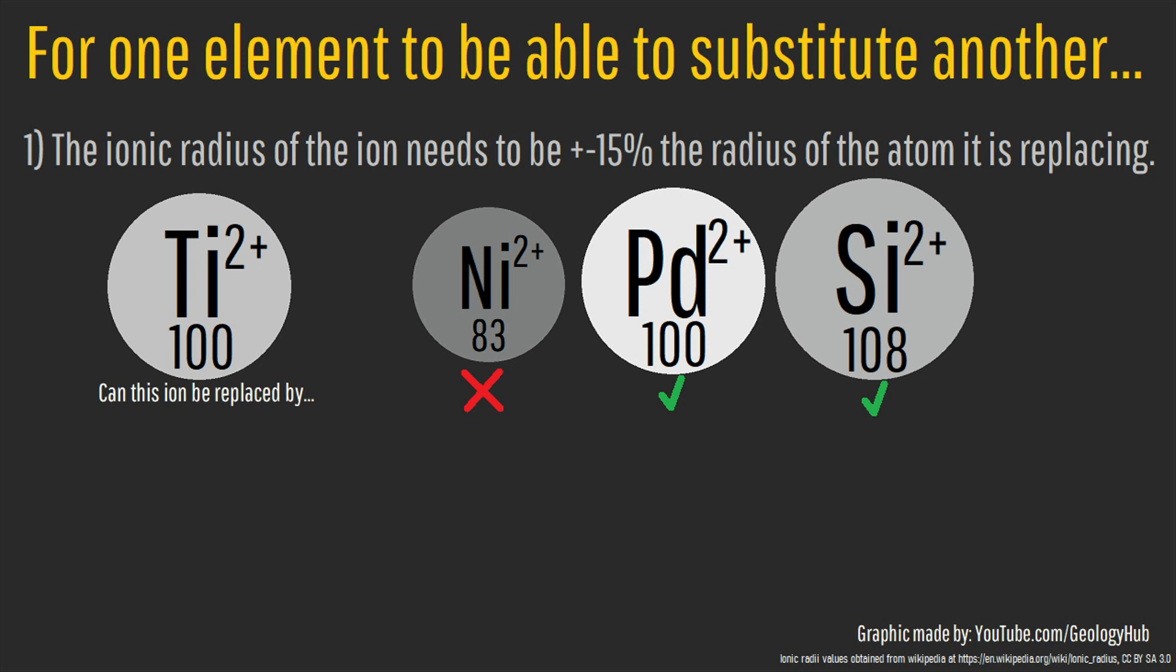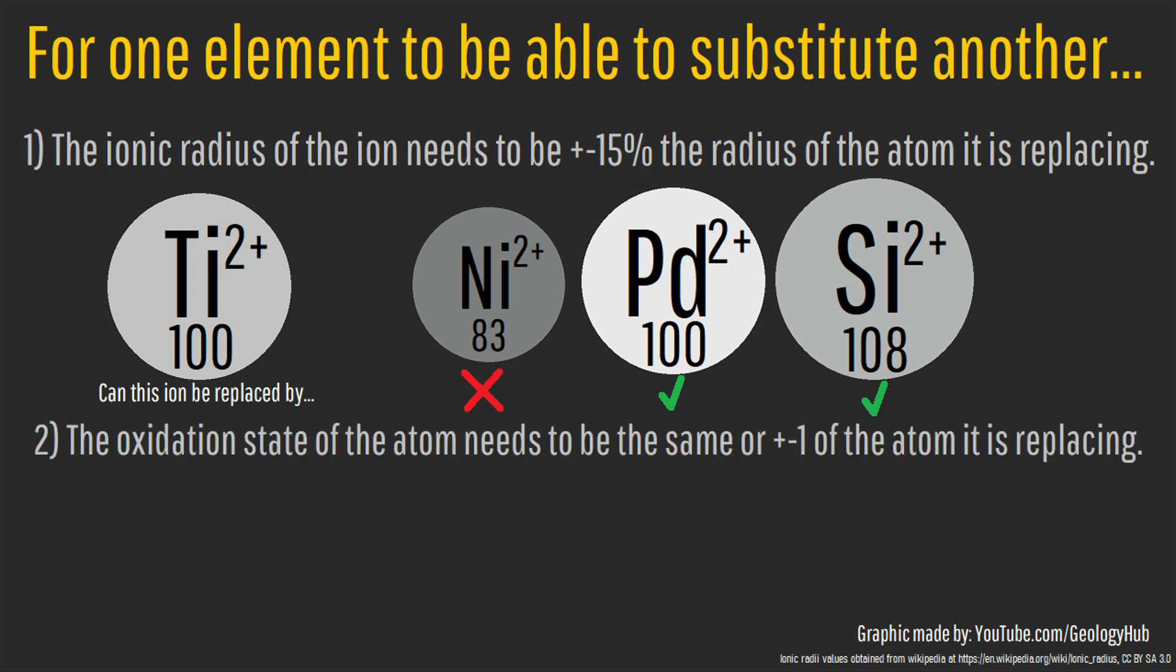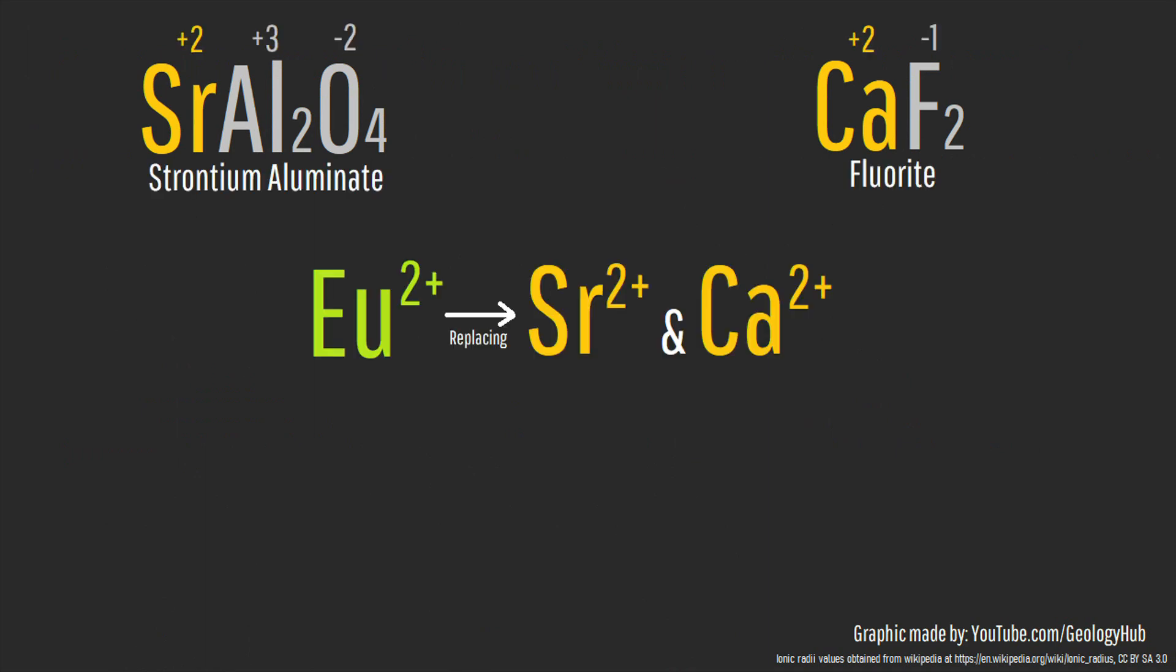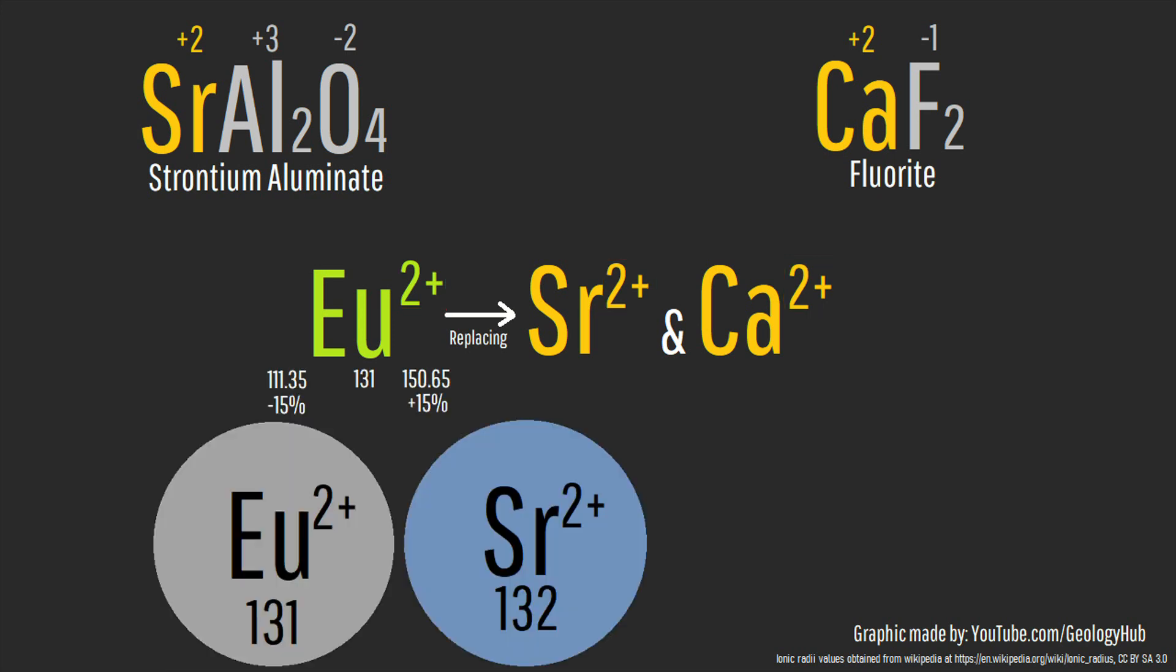For this to occur, the ionic radii needs to be within 15% the ionic radius of the atom it is replacing, along with being the same oxidation state or plus or minus 1 oxidation state of the atom being replaced. Since europium 2+ has the same oxidation state as both calcium 2+ and strontium 2+, and is within 15% the radii of these two ions, it can sometimes replace them.